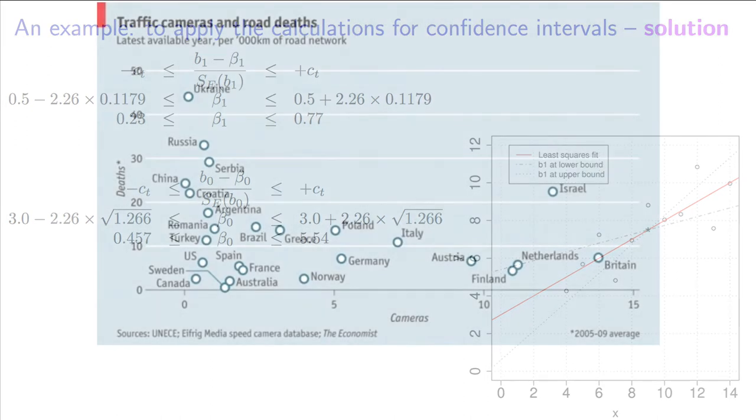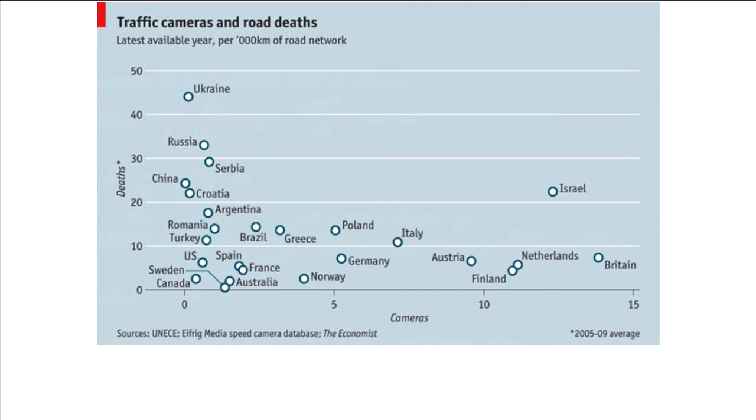Let's look at one more example, and in this case, we're looking at data that shows the number of traffic cameras here on the x-axis, and the number of road deaths per 10,000 kilometers of road network on the y-axis. Is there a cause and effect in this plot? I'll let you pause the video and reflect on that question.